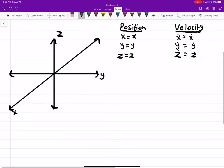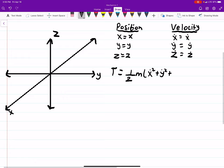Now, our kinetic energy is going to be 1-half M V-squared, which is just X-dot-squared plus Y-dot-squared plus Z-dot-squared.